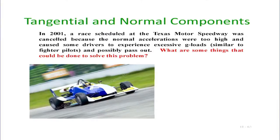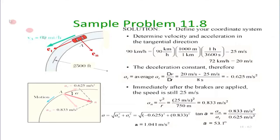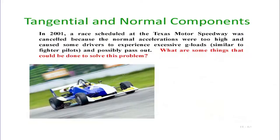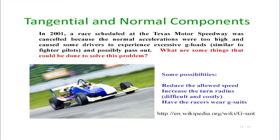An interesting note from Beer and Johnston: some races were cancelled because the normal acceleration from sharp curves at racing speeds was too large — this is the g-effect. In fighter planes, sharp high-speed turns cause the brain not to receive enough blood, making pilots dizzy. Solutions include reducing speed, increasing turn radius, or using a g-suit that applies pressure to prevent blood from draining to lower extremities.